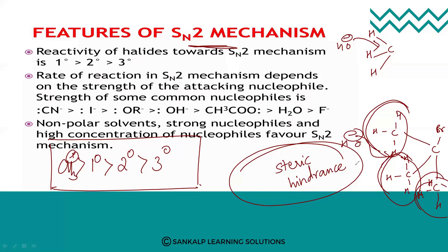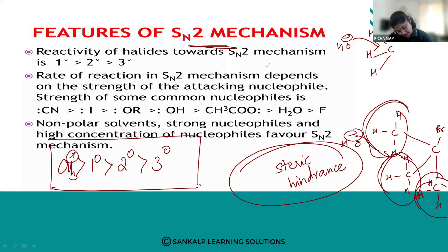Both SN1 and SN2 mechanisms are compulsory exam topics — please mark them as important. You must write the general reaction first and then explain the mechanism with steps. Both name reactions are very important.